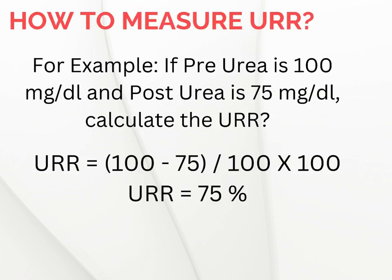Let's put this into action. If a patient starts with a pre-dialysis urea level of 100 mg/dL and after dialysis it is 75 mg/dL, then the calculated Urea Reduction Ratio would be 75%. What does a URR of 75% mean? Imagine your bathtub starts with 100 liters of dirty water — representing urea in the blood. You pull the drain plug, and after draining, only 25 liters of dirty water remains. Boom — you just did a dialysis adequacy calculation in seconds!